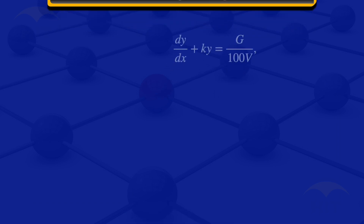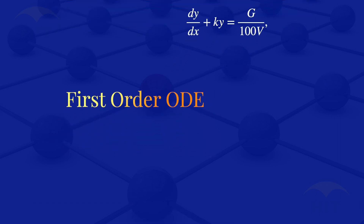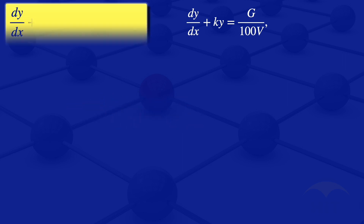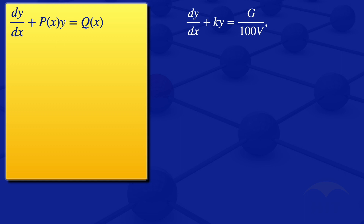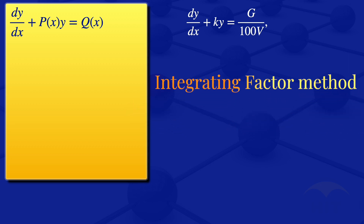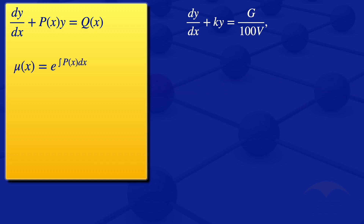This ODE is a linear first-order ODE. When we have linear first-order ODEs of the form: derivative of y with respect to x plus p of x multiplied by y equals q of x, we can solve them using an integrating factor. The integrating factor is given by mu of x equals the exponent of the integral of p of x with respect to x, where p of x is the coefficient of y.